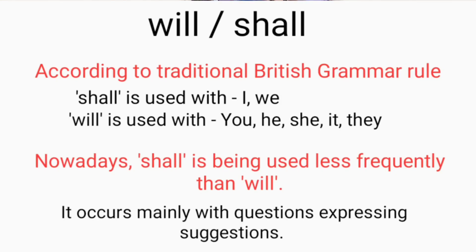Regarding the use of 'will' or 'shall' in future tense: according to traditional British grammar rules, 'shall' is used with first person pronouns — that is 'I' and 'we' — whereas 'will' is used with second and third person pronouns — that is 'you', 'he', 'she', 'it', or 'they'. But these days, 'shall' is being used less frequently than 'will'. 'Shall' is used mainly with questions expressing offers and suggestions. So in this lesson, while explaining future tense, I have used 'will'.